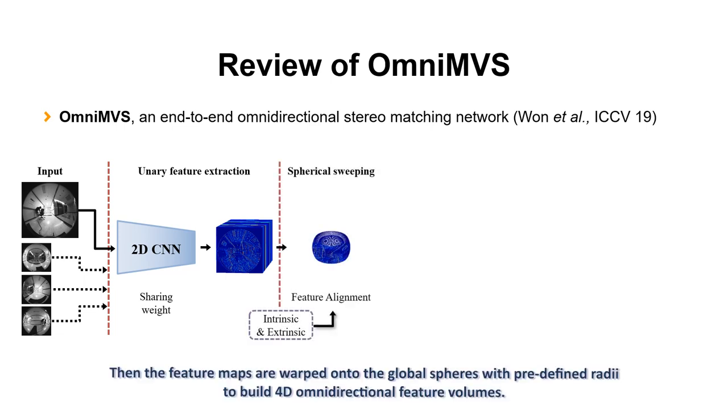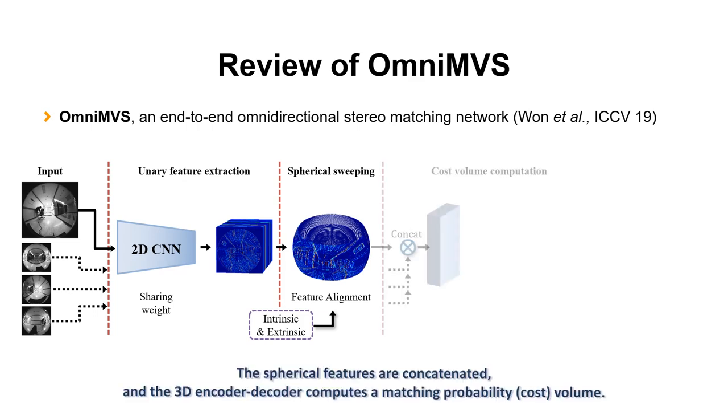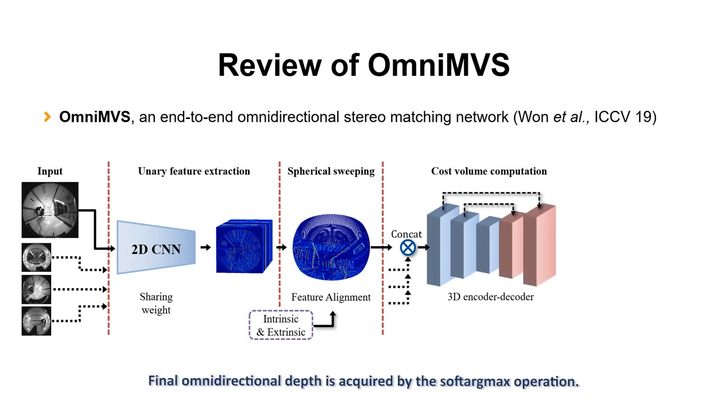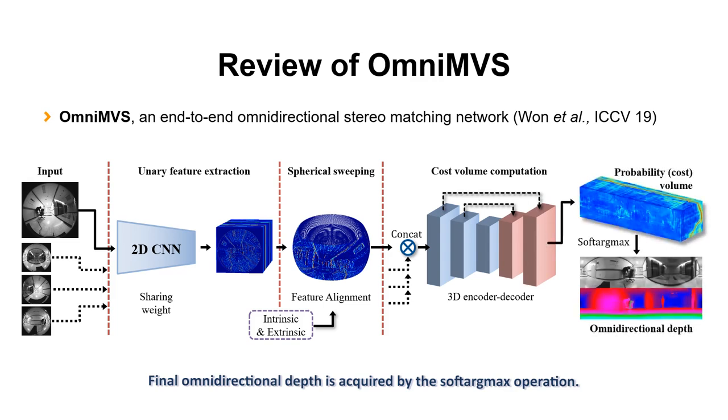Then the feature maps are warped onto the global spheres with pre-defined radii to build 4D omnidirectional feature volumes. The spherical features are concatenated, and the 3D encoder-decoder computes a matching probability volume. The final omnidirectional depth is acquired by the soft argmax operation.